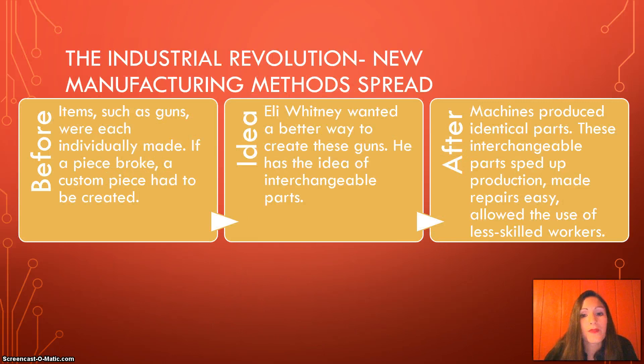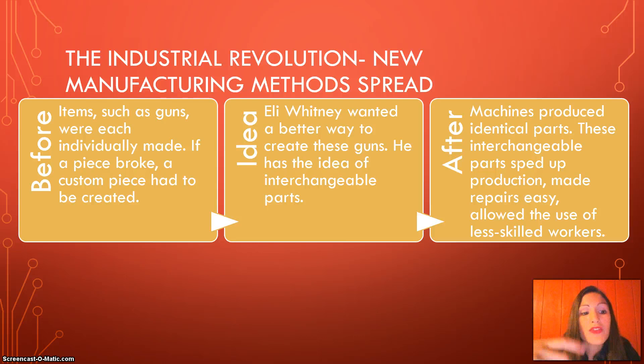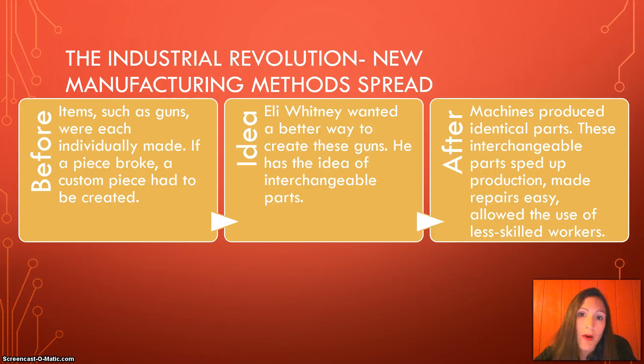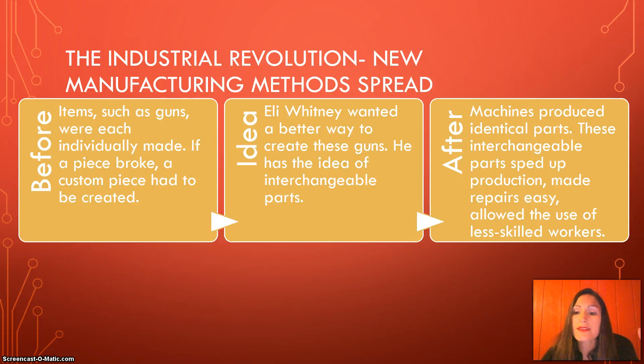Before, items such as guns were each individually made, and if a piece broke, they would have to make a custom piece specific to that gun. Eli Whitney had the idea of interchangeable parts — making every part exactly the same so that if one breaks, you can replace it without custom fitting it. Machines produce identical parts, and by doing this it sped up production, made repairs easy, and allowed the use of less skilled workers, since a factory worker rather than a specialized gunsmith could produce each part.